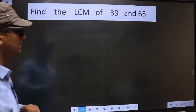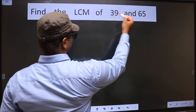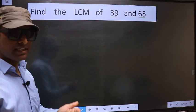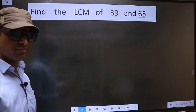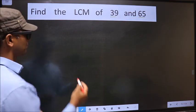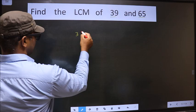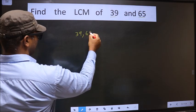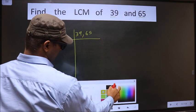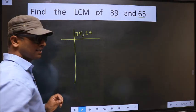Find the LCM of 39 and 65. To find the LCM, first we should frame it in this way. See, that is 39, 65. Okay, next.